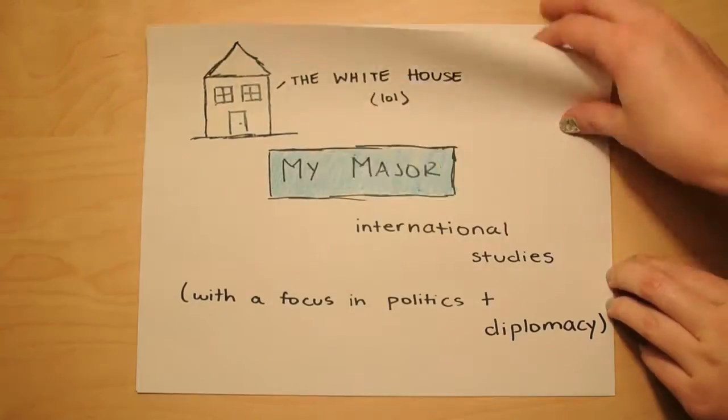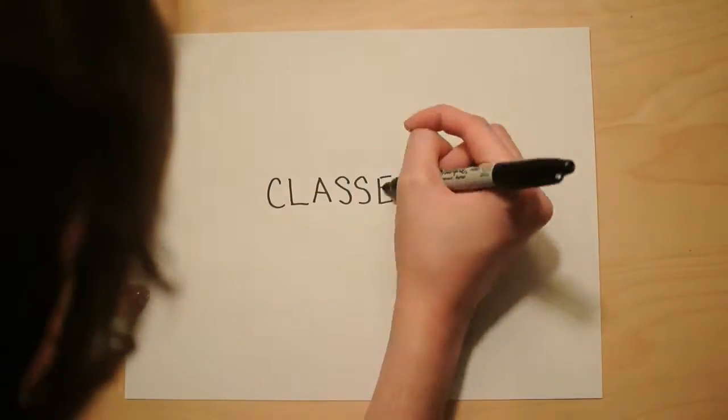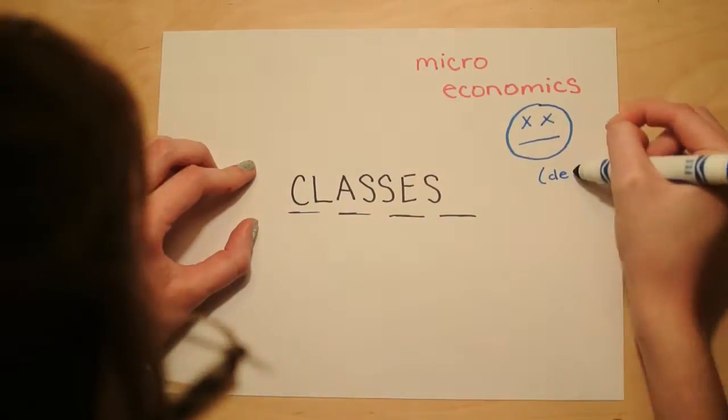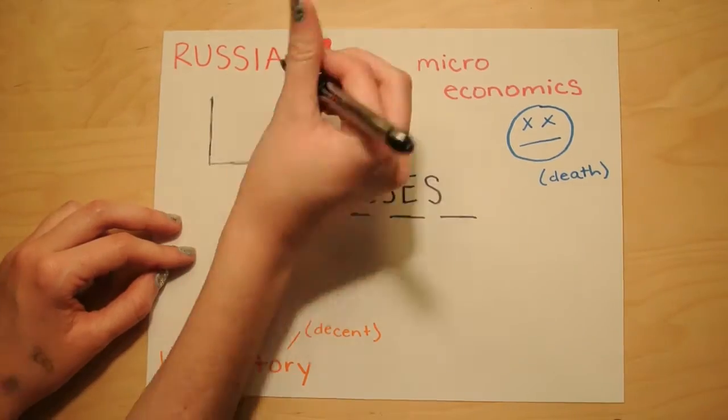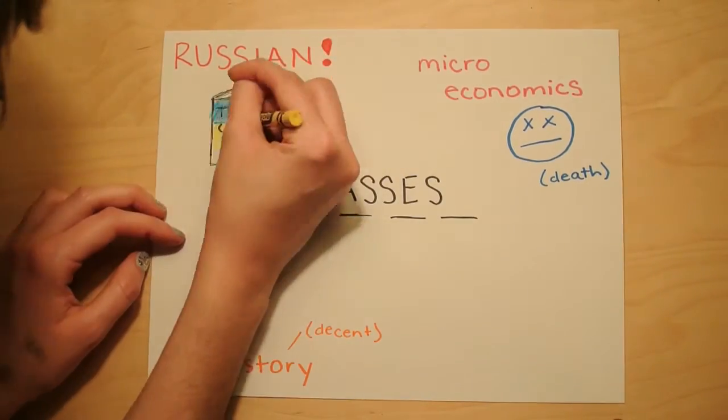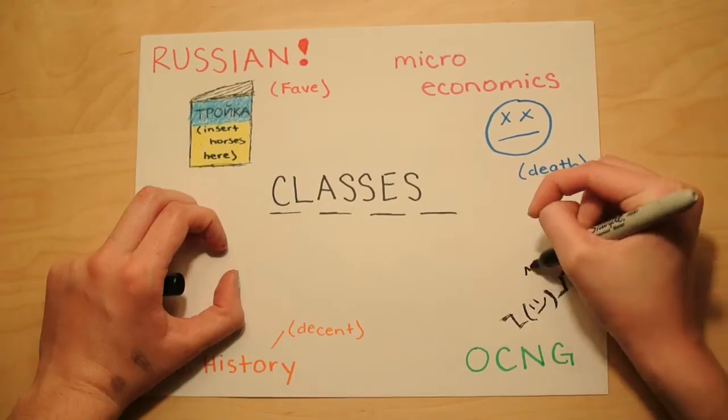Also, my drawings are A+. I took Microeconomics, which is horribly boring. U.S. History, which is decent. Russian, for my degree. Look, I'm even drawing the textbook. And Oceanography, which was just kind of meh.